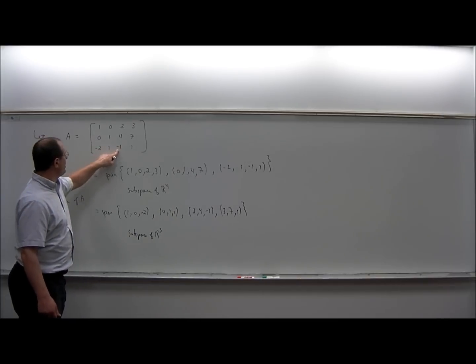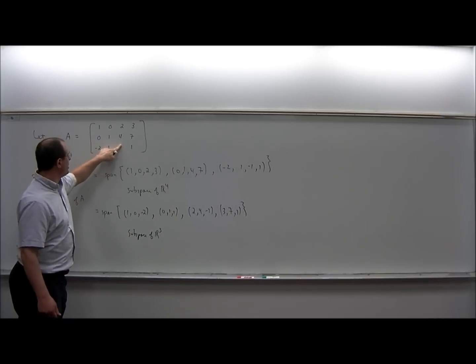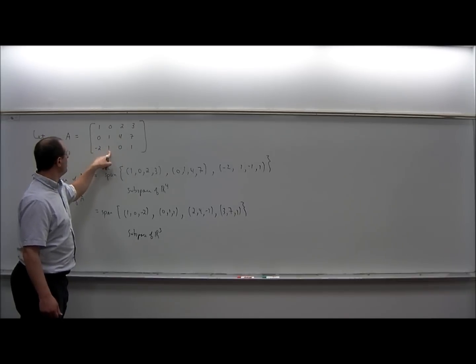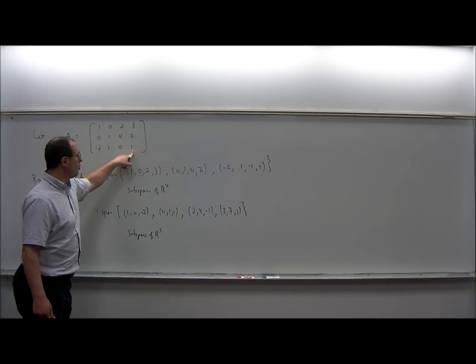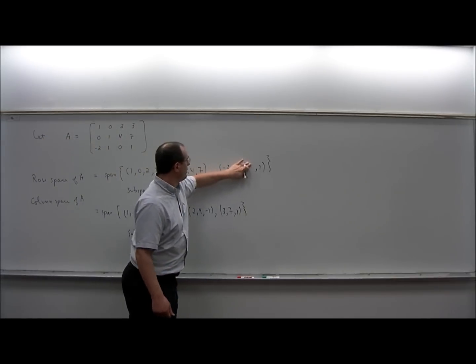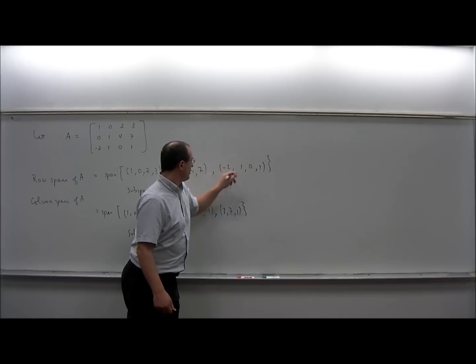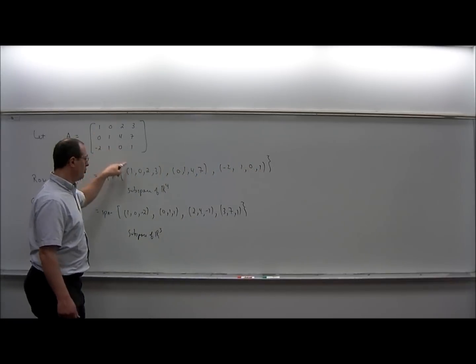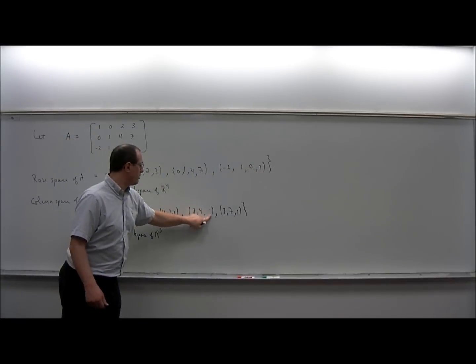Actually, one of the entries I want to change to a 0. So negative 2, 1, 0, 1 — I want that number to be a 0. And similarly 2, 4, 0.